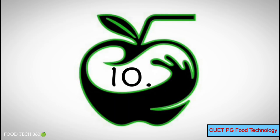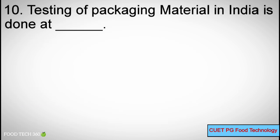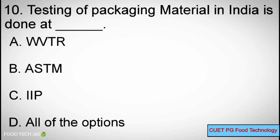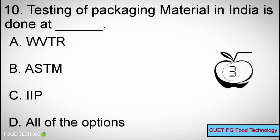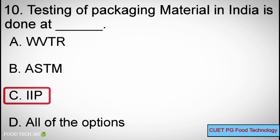Question number 10. Testing of packaging material in India is done at dash. Options: A) WVTR, B) ASTM, C) IIP, D) all of the options. Correct answer: C) Indian Institute of Packaging (IIP).